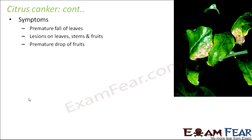Symptoms of citrus canker include premature leaf fall, lesions on leaves, stems, and fruit, and premature drop of fruits. Economically, a citrus plant suffering from this disease will not produce mature fruits because they drop off much before time.